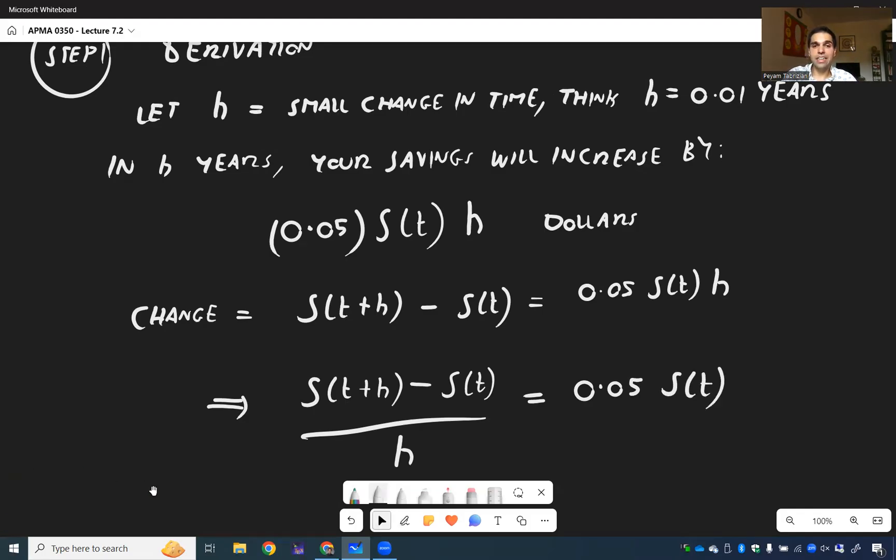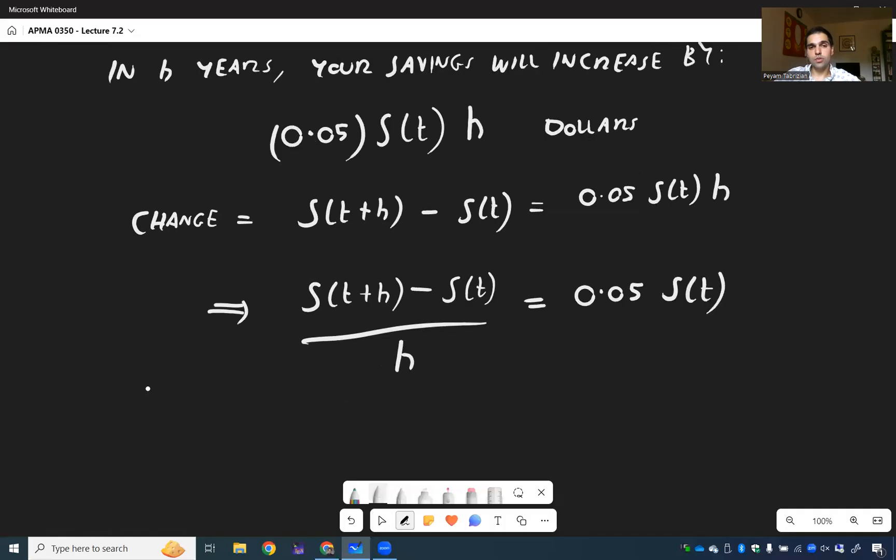And then last but not least, taking the limit as h goes to 0, we get a small increment. Now we really want to make it infinitesimally small. You then get S'(t) equals 0.05 S(t).